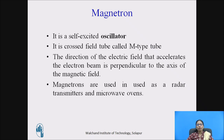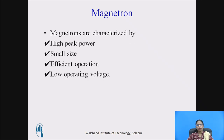Magnetron is a self-excited oscillator. It is a cross-field tube called an M-type tube. The direction of the electric field that accelerates the electron beam is perpendicular to the axis of the magnetic field — meaning electric field and magnetic field are perpendicular to each other, which is why the magnetron is called a cross-field tube. Magnetrons are used in radar transmitters and in microwave ovens. They are characterized by high peak power, small size, efficient operation, and low operating voltage.